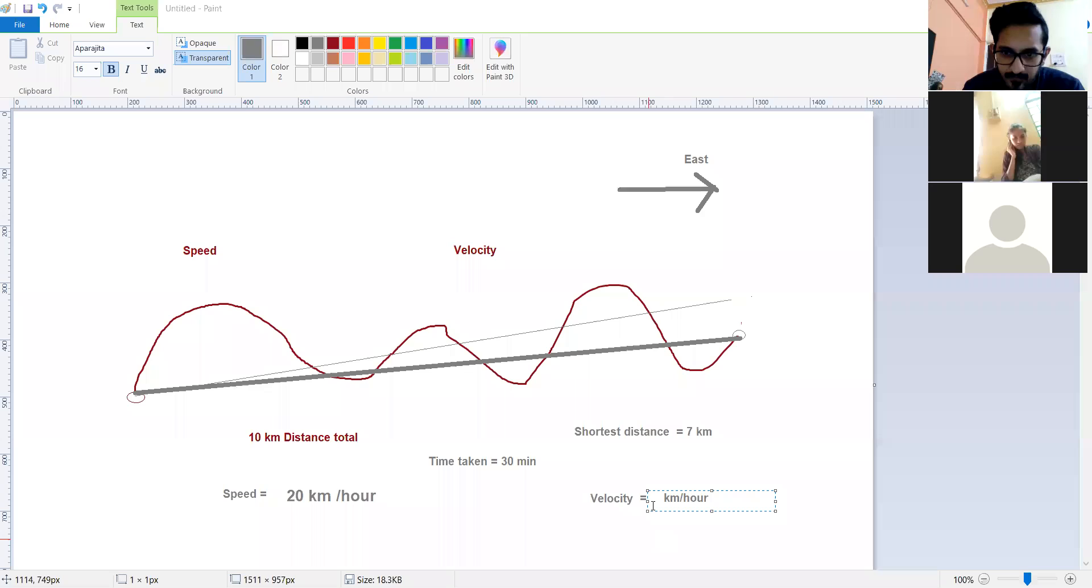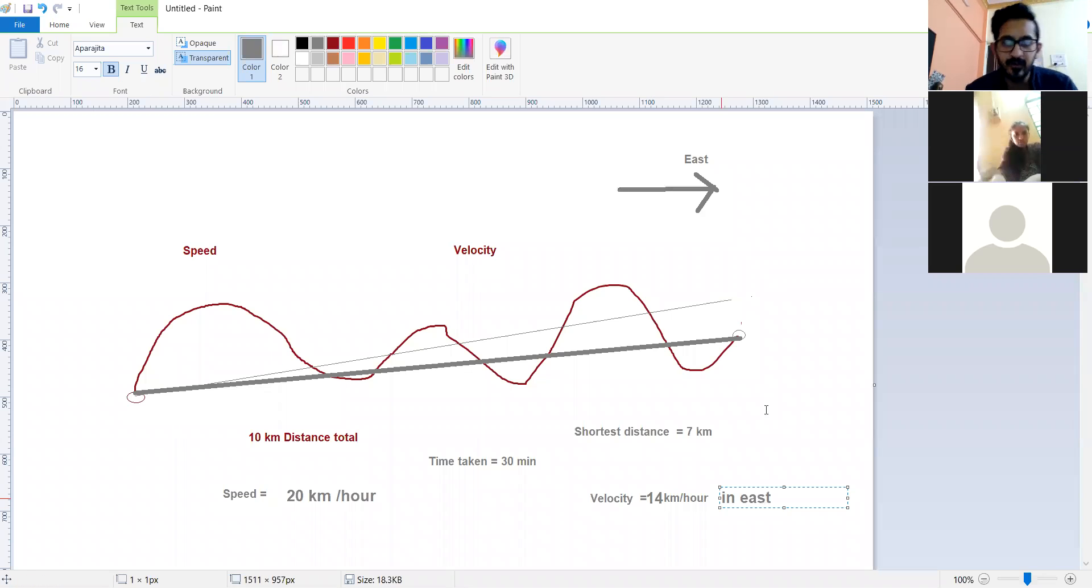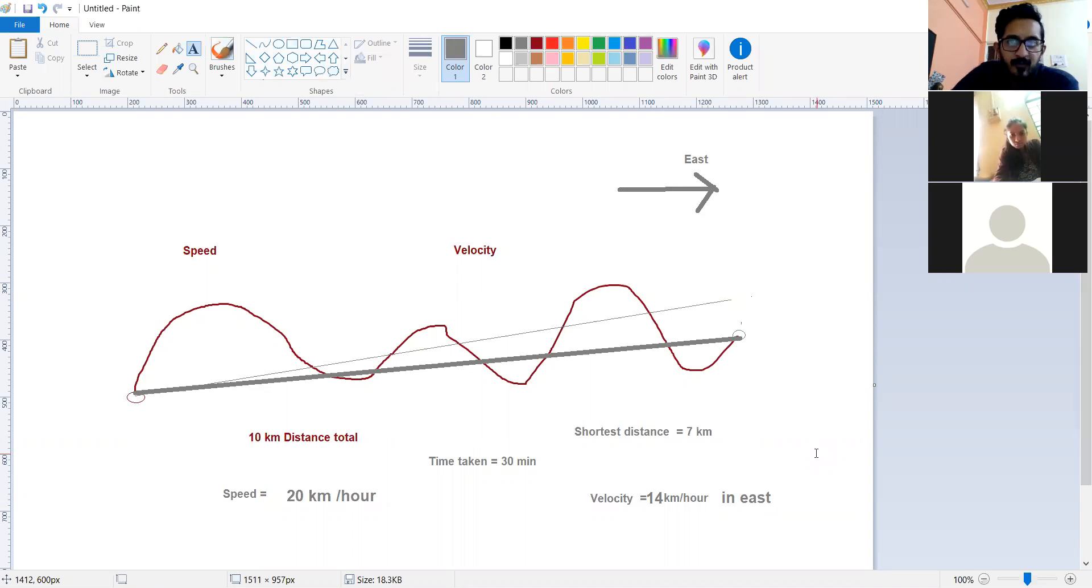That is the complete answer, very good. So Sandesh has also answered. The total answer is 14 km per hour, it is 14 km per hour, and it is in the direction of east.